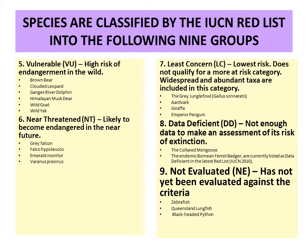The eighth category is data deficient — there is not enough data to make an assessment of the species' risk of extinction. Examples include the collared mongoose and the Bornean badger.